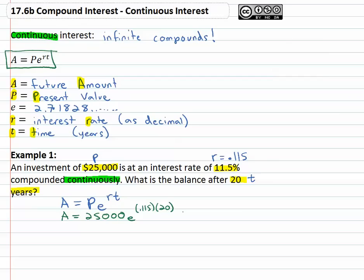You type in 25,000 and then you need the E. To get the E there's usually either a second button in the top left corner, some calculators it's a shift button and then usually there's another button that says LN. And right above LN you will see written in the background, not on a button, E to the X.